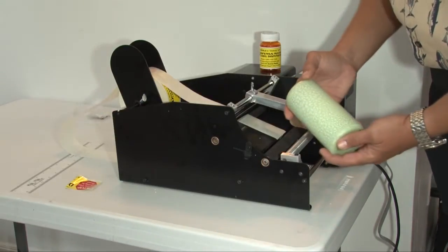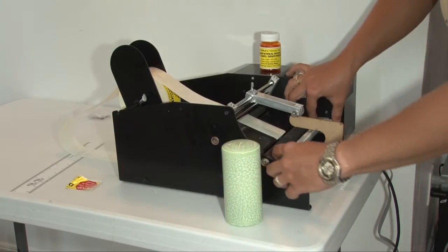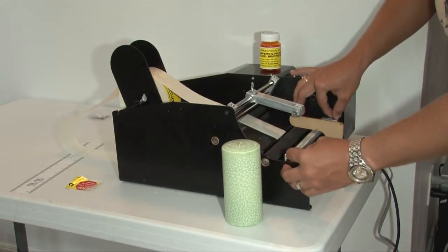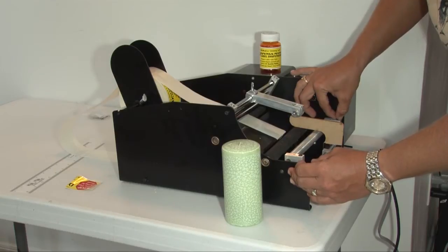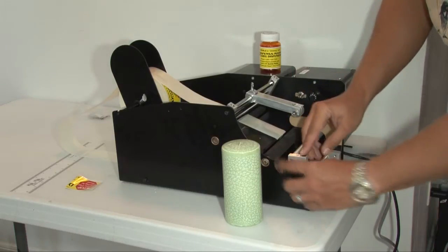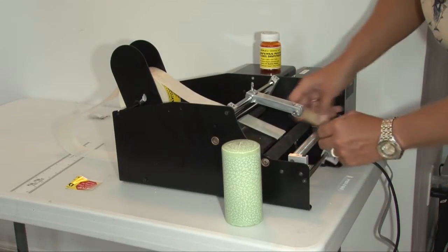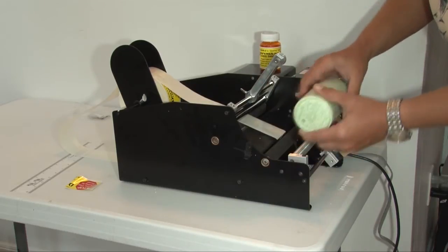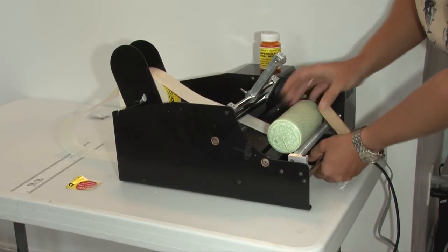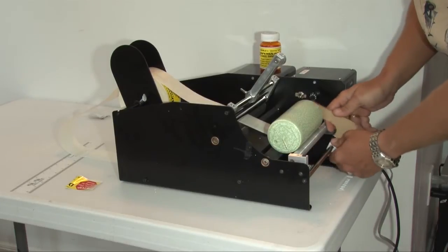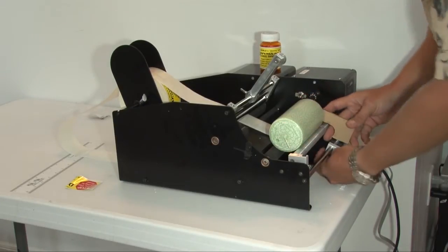Now we can try something a little larger. This is a candle. So we're going to move the roller out a little bit. Again, it doesn't have to be perfect. It just has to cradle the container you're labeling so it doesn't fall out. One of the main things is that whenever you set up your bottle roller, if you have a straight container, that it's even on both sides.